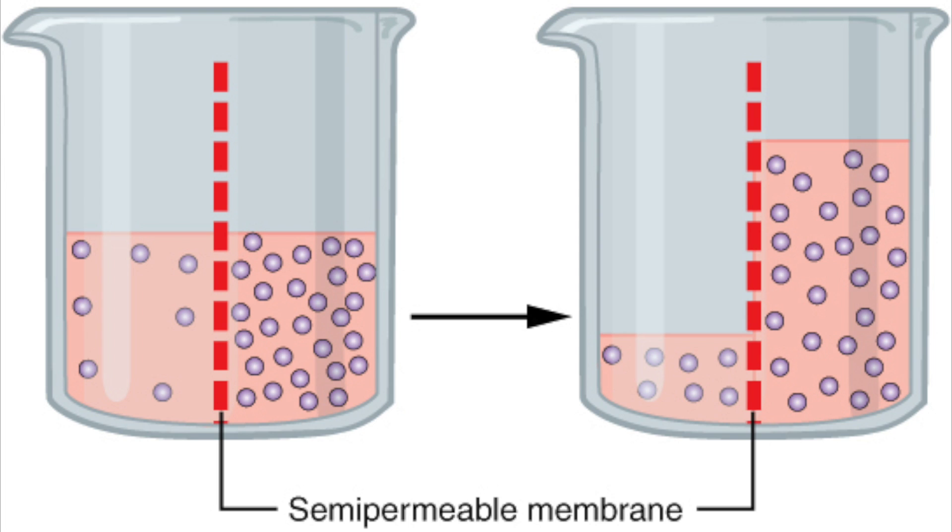Now a partially permeable membrane means that smaller molecules like water can pass through, yet larger ones are too big, so it only allows small molecules to pass through.